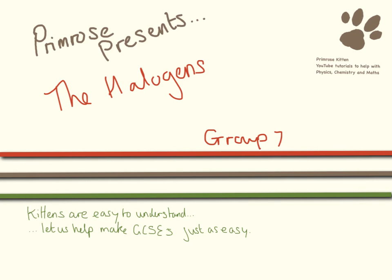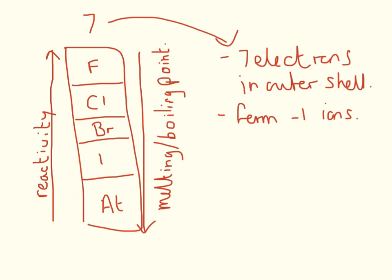Hello and welcome to this video which is all about the halogens, which are also known as group 7 elements. So halogens are in group 7, which means they have 7 electrons in their outer shell and they are going to form minus 1 ions.